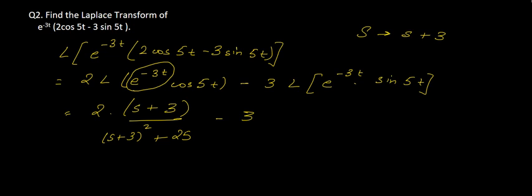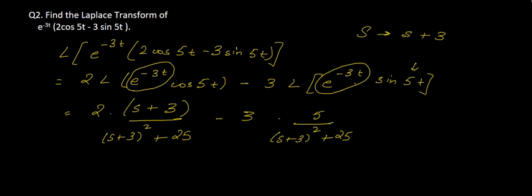Here we also have e to the power minus 3t so our s becomes s plus 3, and our a here is 5, so our value will be a by s square plus a square, which gives 5 by (s plus 3) whole square plus 25. Further solving this equation, we get our answer as 2s minus 9 in the numerator and s square plus 6s plus 34 in the denominator. This is our Laplace Transform of the given equation.